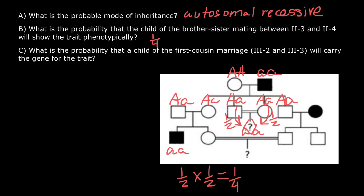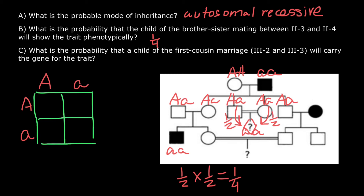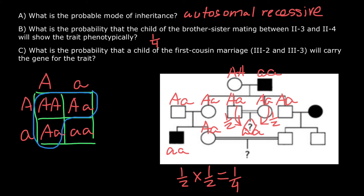What is the probability that this person would also be a carrier? Let's build a simple Punnett square: capital A, small a for one parent and capital A, small a for the other parent. The results are: capital A capital A, capital A small a, capital A small a, and small a small a. We know for sure that this person doesn't belong to the small a small a genotype, otherwise she would be affected just like her brother. So she belongs to one of the three remaining genotypes, and we are specifically interested in her probability of being a carrier — being capital A, small a genotype. In this case, the probability would be two out of three.